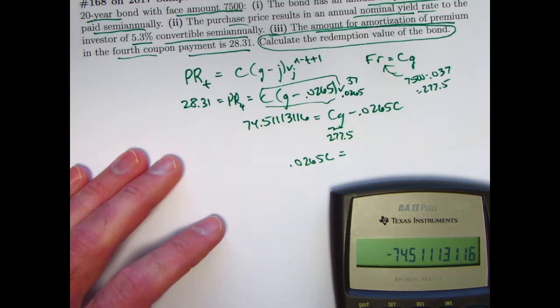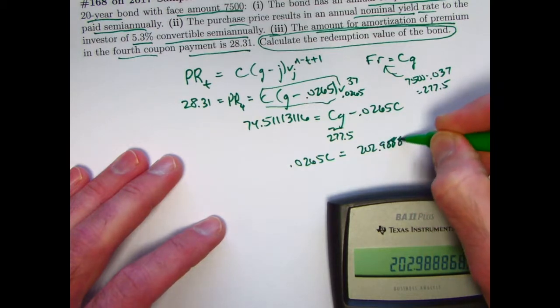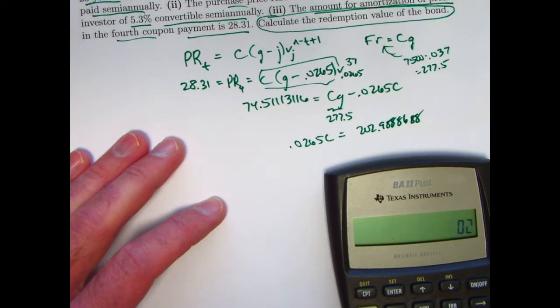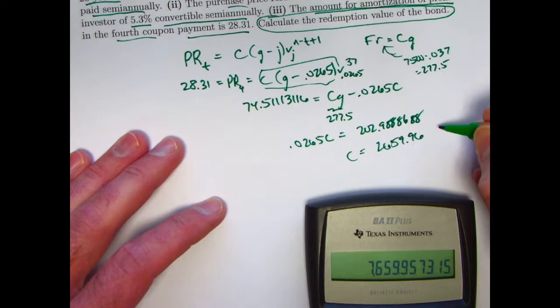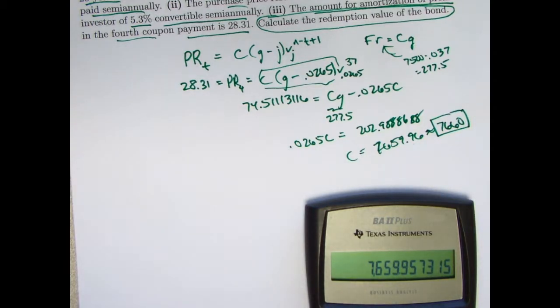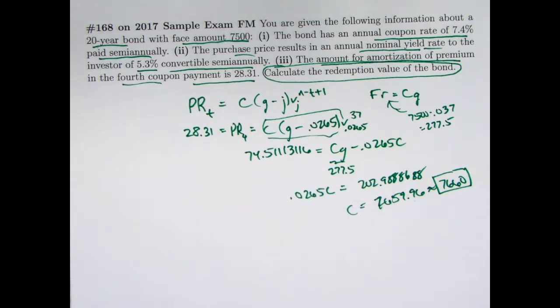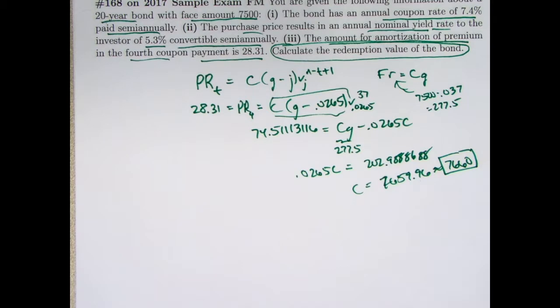And add 277.5 to get 202.9888688 over there. Now divide everything by 0.0265. Divide by 0.0265. Get C to be 7659.96, which rounds to 7660. And that is answer A for this sample problem from sample exam FM. And that is the correct answer. And that is pretty quick. So if you know this formula, just plug in the numbers, use this fact too, and you can solve for C pretty quickly without even bothering to solve for the modified coupon rate little g.